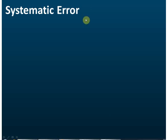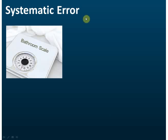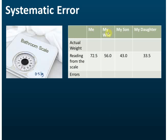Let's look at an example of systematic error. We have a bathroom scale that does not start from exactly zero — it starts from 0.5 kg. I use this bathroom scale to measure my weight, my wife's weight, my son's weight, and my daughter's weight, and these are the readings I get.